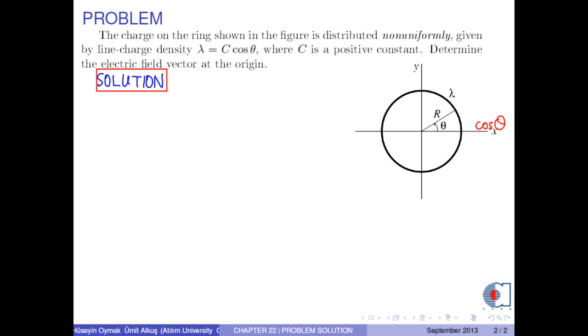Because cosine theta is the x-axis and sine theta is the y-axis, according to the formula lambda equals c times cosine theta, the right side of the ring becomes positively charged. By the same way, the left side of the ring becomes negatively charged.